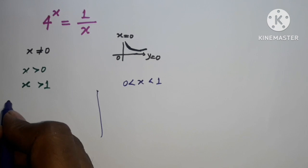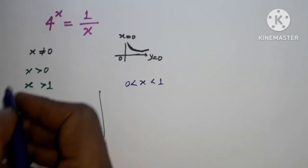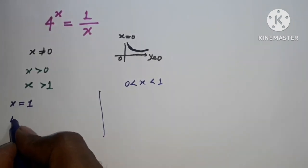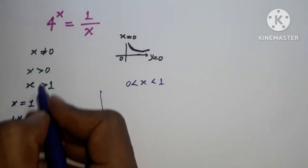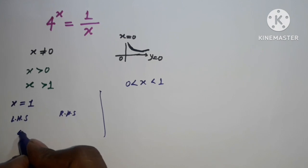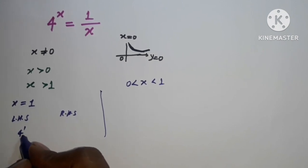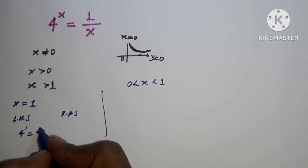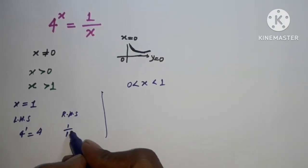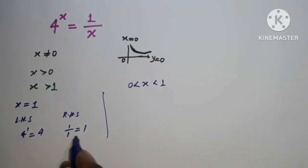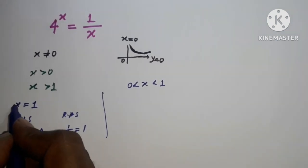Suppose x is equal to 1. On the LHS we have 4 to the power 1, which is 4. On the RHS we have 1 by x, which is 1 by 1, that is 1. So 4 is not equal to 1 — we cannot take x equal to 1.